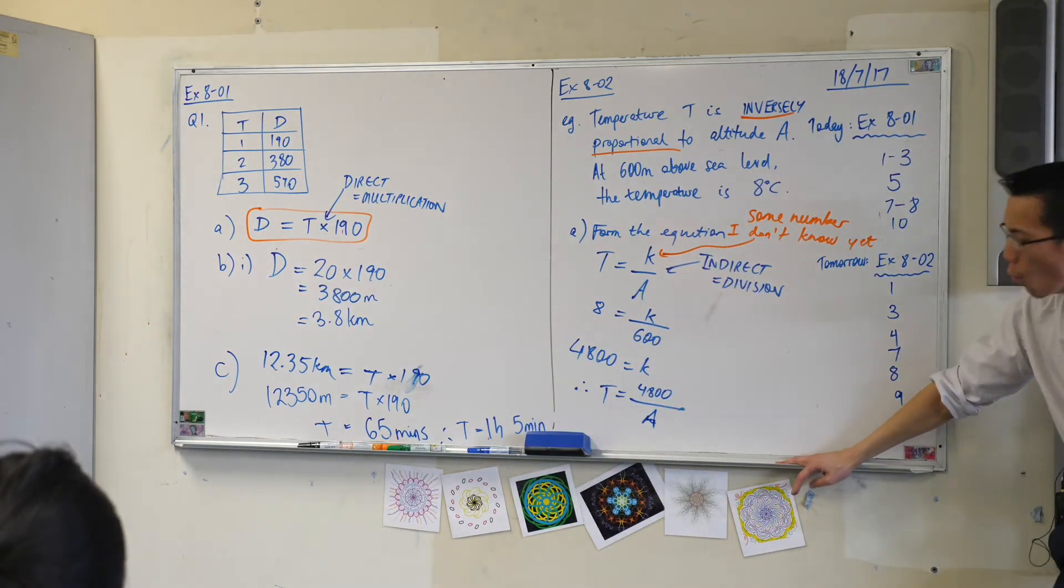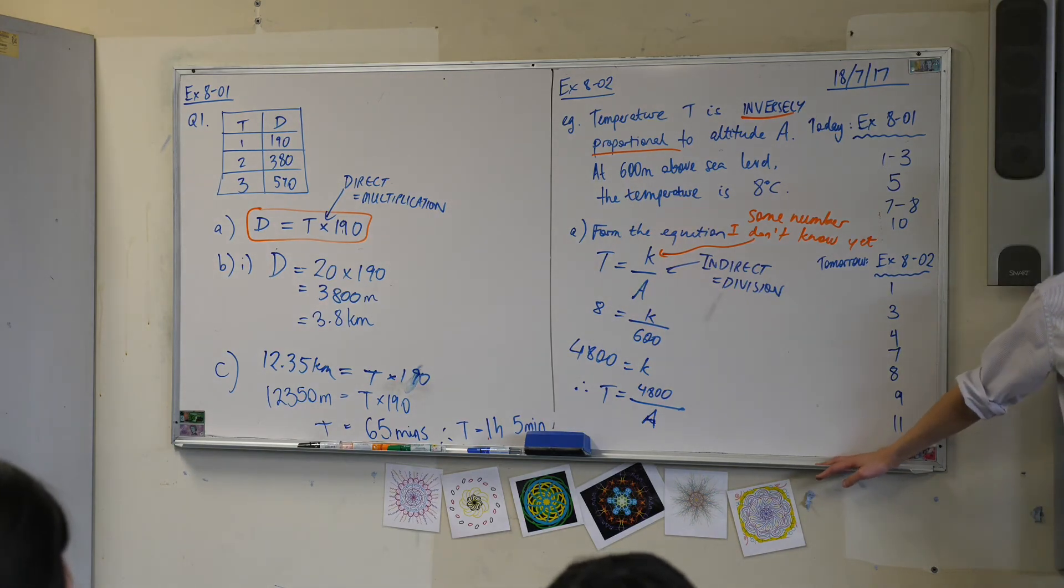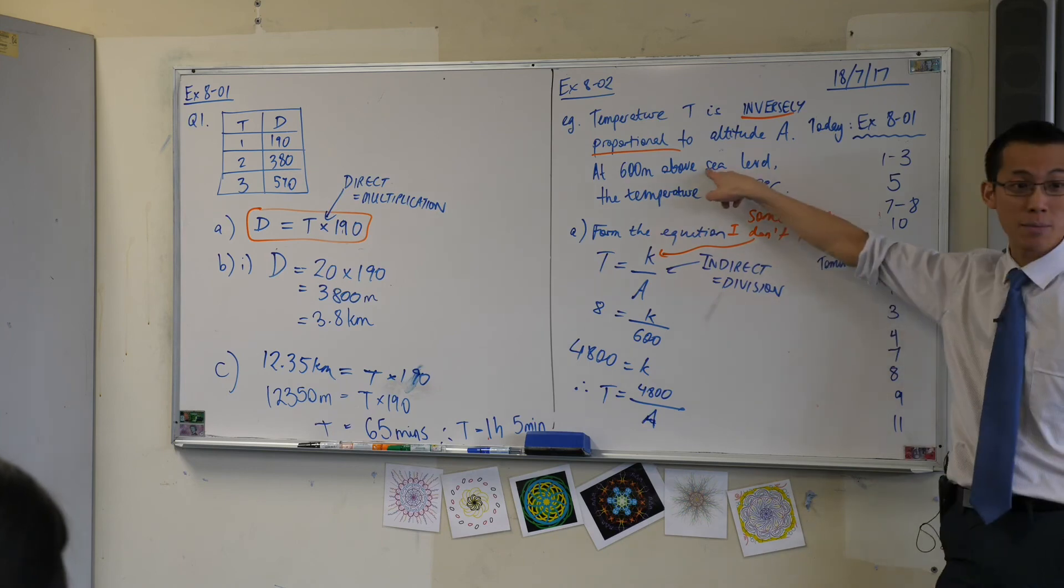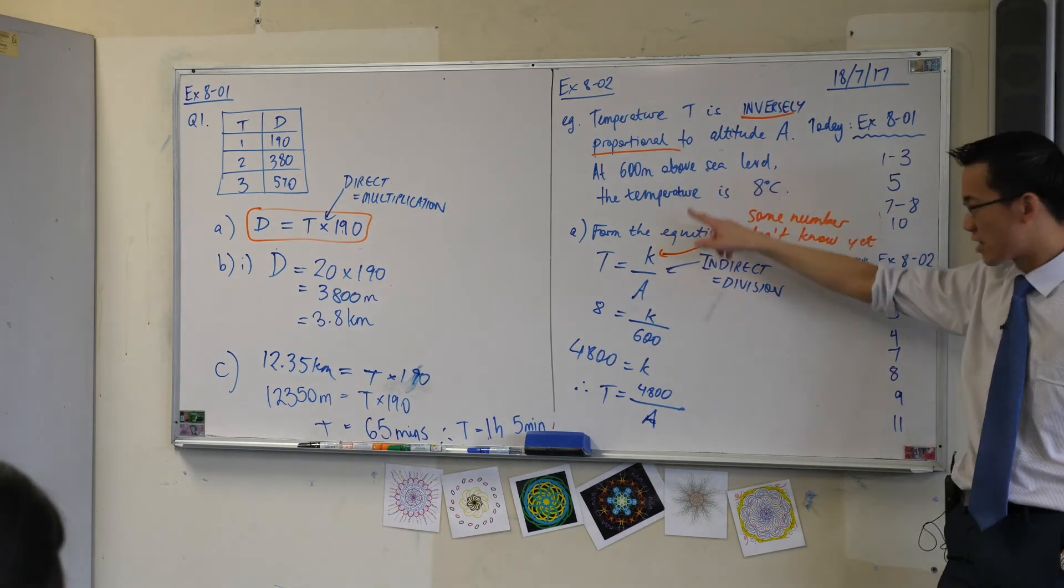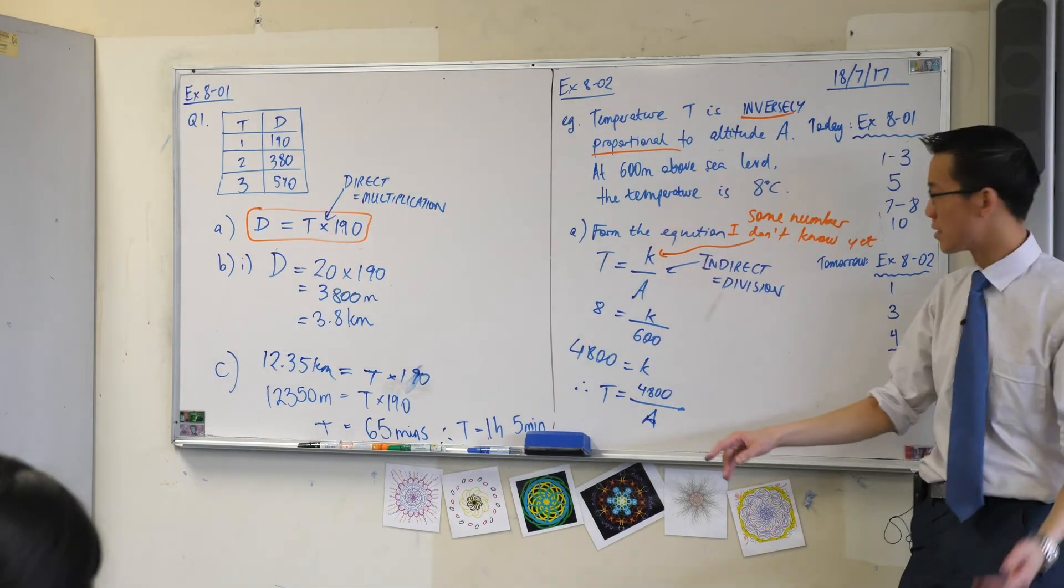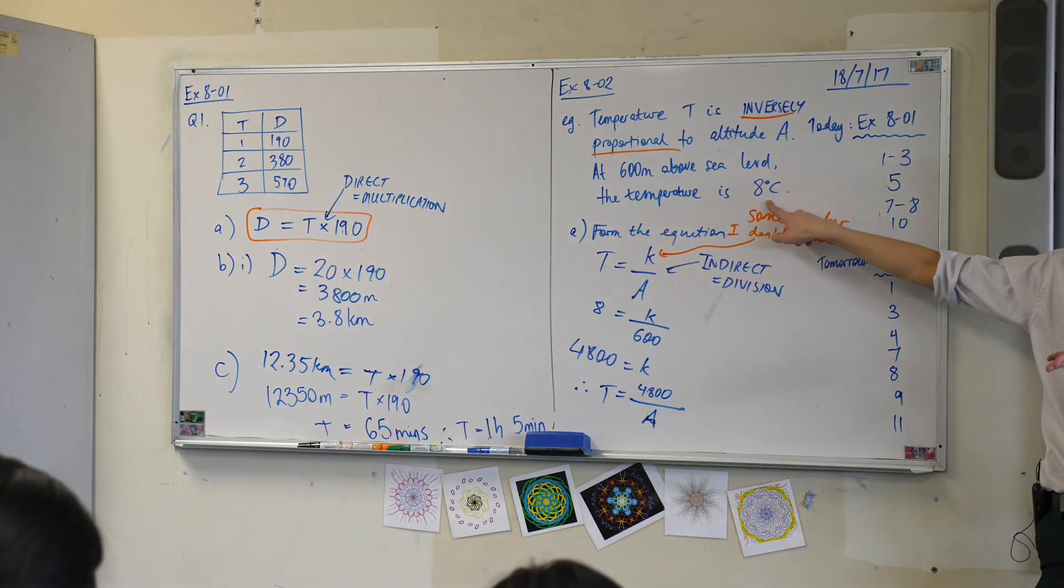For instance, what would the temperature be if you were 1,000 meters above sea level, not 600 meters? It's going to be 4,800 divided by 1,000, which is 4.8 degrees. So you can see it's getting colder as you get higher. Does that make sense?